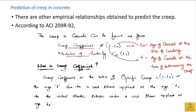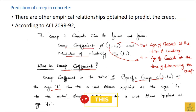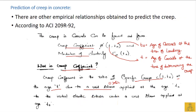The creep coefficient is the ratio of the specific creep at time t — the age at which you are determining the creep — due to a unit stress of one Newton per mm² applied at the age t-naught. This load remains applied from age t-naught until age t.